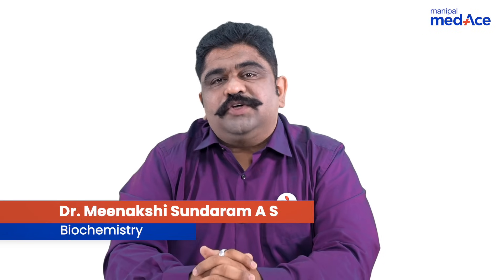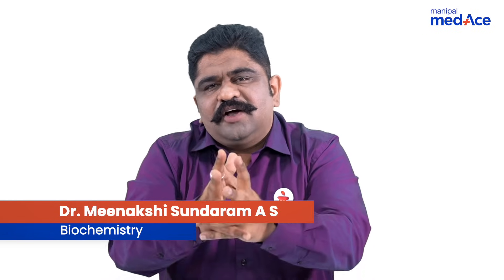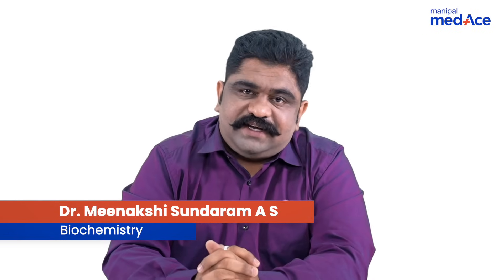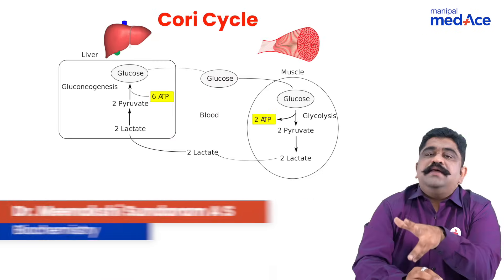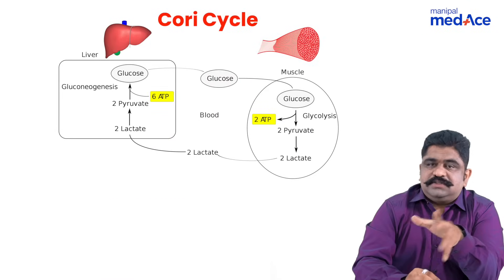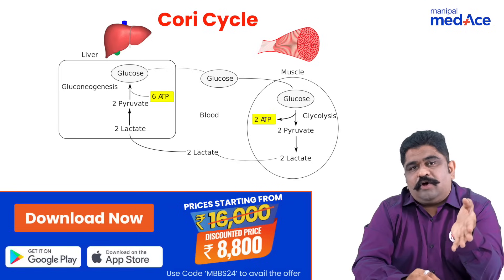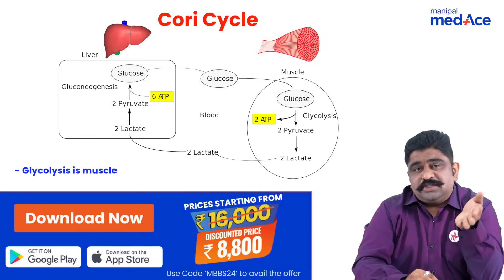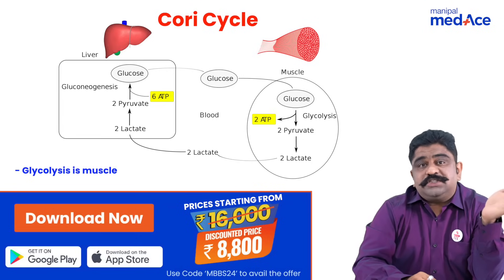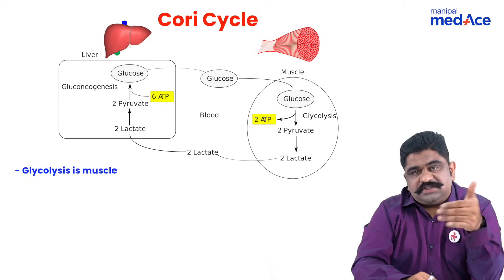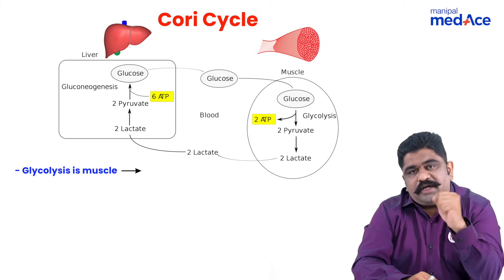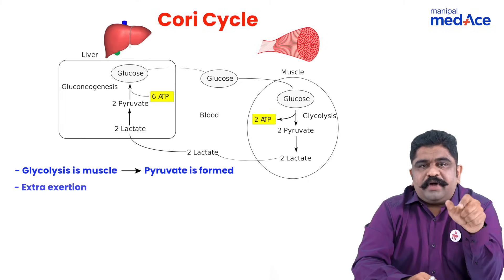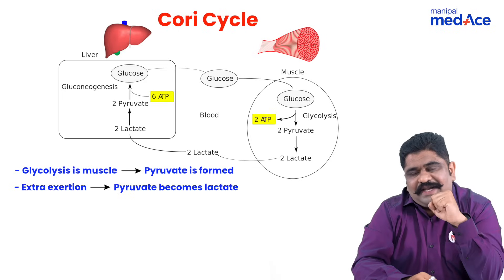Let us discuss the significance of Cori cycle. Cori cycle is the glucose-lactate cycle. In case of muscles, when the muscles are normally contracting, the glucose already present in the muscles or glycogen reservoir present in the muscle can go for a breakdown and produce pyruvate. From pyruvate, they can produce lactate.